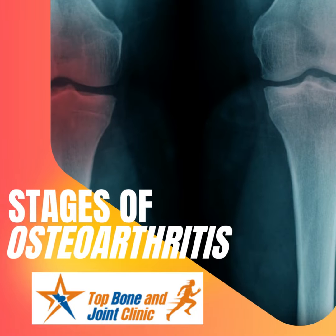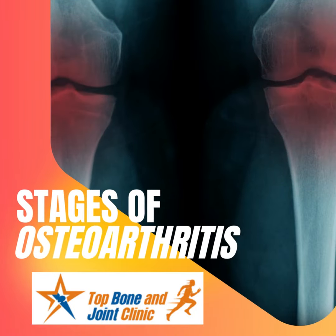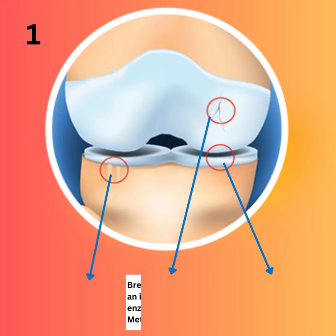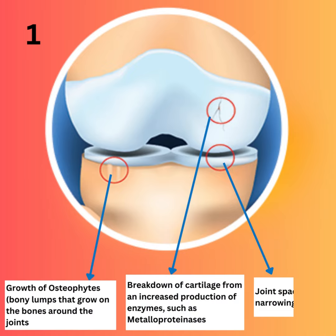Today, let us know the stages of osteoarthritis. In stage 1, there is breakdown of cartilage from an increased production of enzymes such as metalloproteinases.